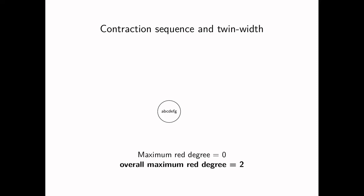In that contraction sequence, the overall maximum red degree was 2. We never had a vertex with red degree 3 among all those trigraphs. So that would witness that the twin-width is at most 2. And in general, the twin-width of a graph will be the least integral d such that there is a contraction sequence where the overall maximum red degree is d. We will talk about sequences of d contractions or d-sequences for short. In this small example, the twin-width of this graph was exactly 2.